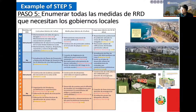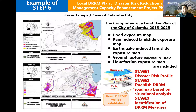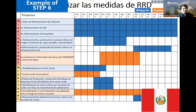This is a good example of step five from Peru, showing both mitigation and preparedness, structural measures and non-structural measures, across short-term, mid-term, and long-term timeframes. In step six, we need to carefully think about which future measures are most holistically effective from the list made in step five. Make a shortlist to reduce residual risk considering feasibility, cost effectiveness, and financial resources. Then seek the best balance of structural and non-structural measures and effective sequences to implement projects. This image of step six from Peru shows how prioritized projects are planned with consideration of implementation sequence.